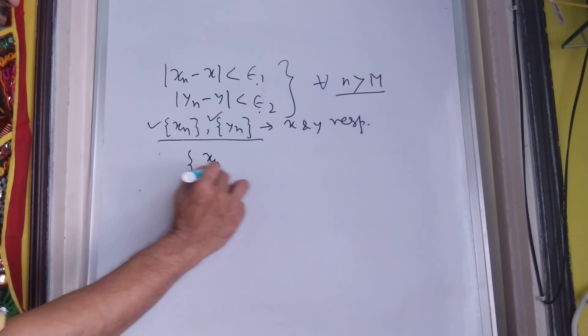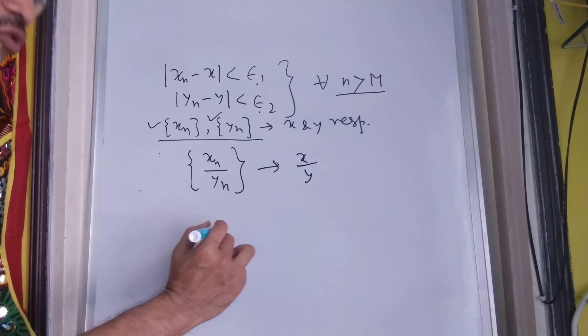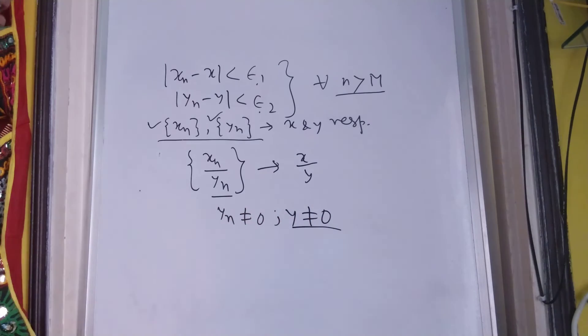Whenever we have xn by yn, this converges to x by y, provided we have no yn to be 0 and no y limit is non-zero limit. This is obviously a prerequisite and you can easily establish this.